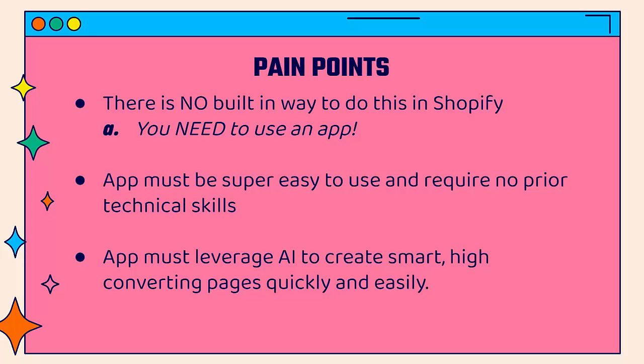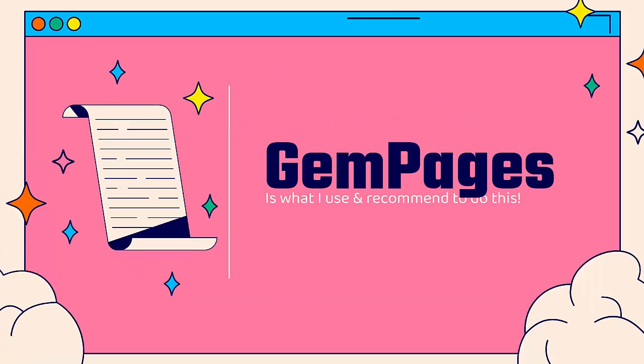The app must also leverage AI. There are a lot of new features coming out with AI and we want to make sure we're leveraging AI in our landing pages as well, to create really smart, high converting pages quickly and easily. I'm going to show you how to do all of that over the shoulder with GemPages. I highly recommend GemPages — this is what I use on my store. You'll see the link directly below this video.